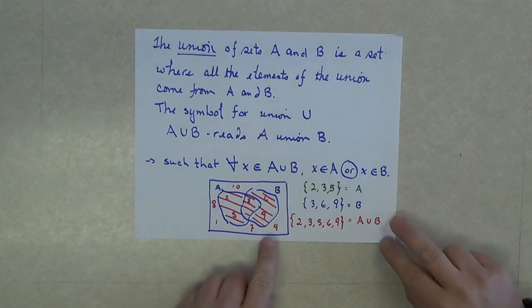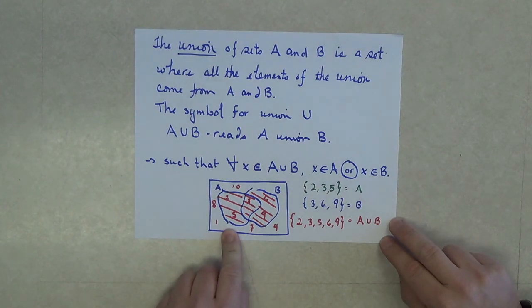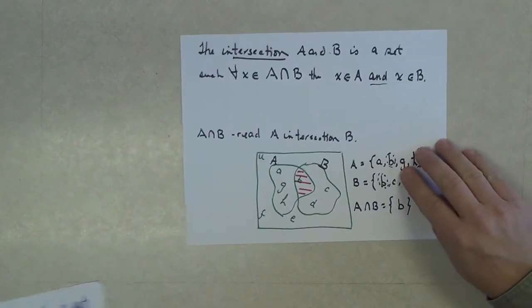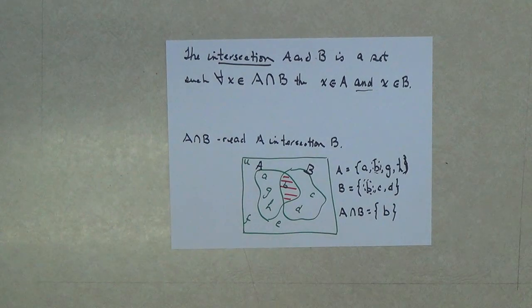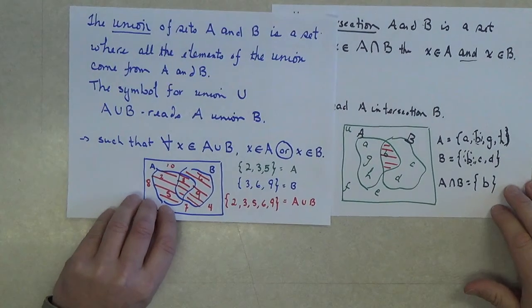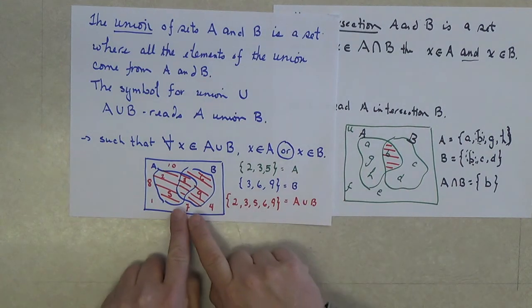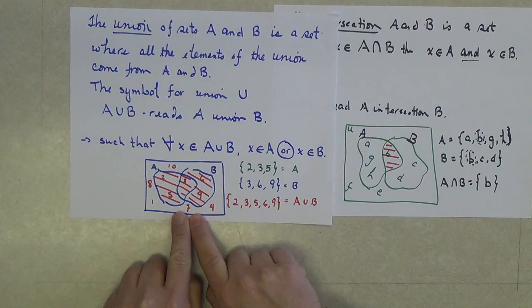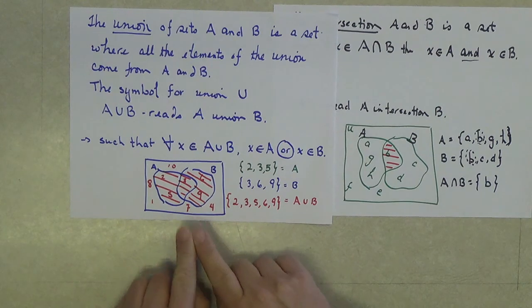So, the union, both sets together. The intersection, just what the two sets have in common and only what is in common. And one of the things you should notice is it's pretty obvious that the intersection is the subset of a union. Intersections are subsets of unions.